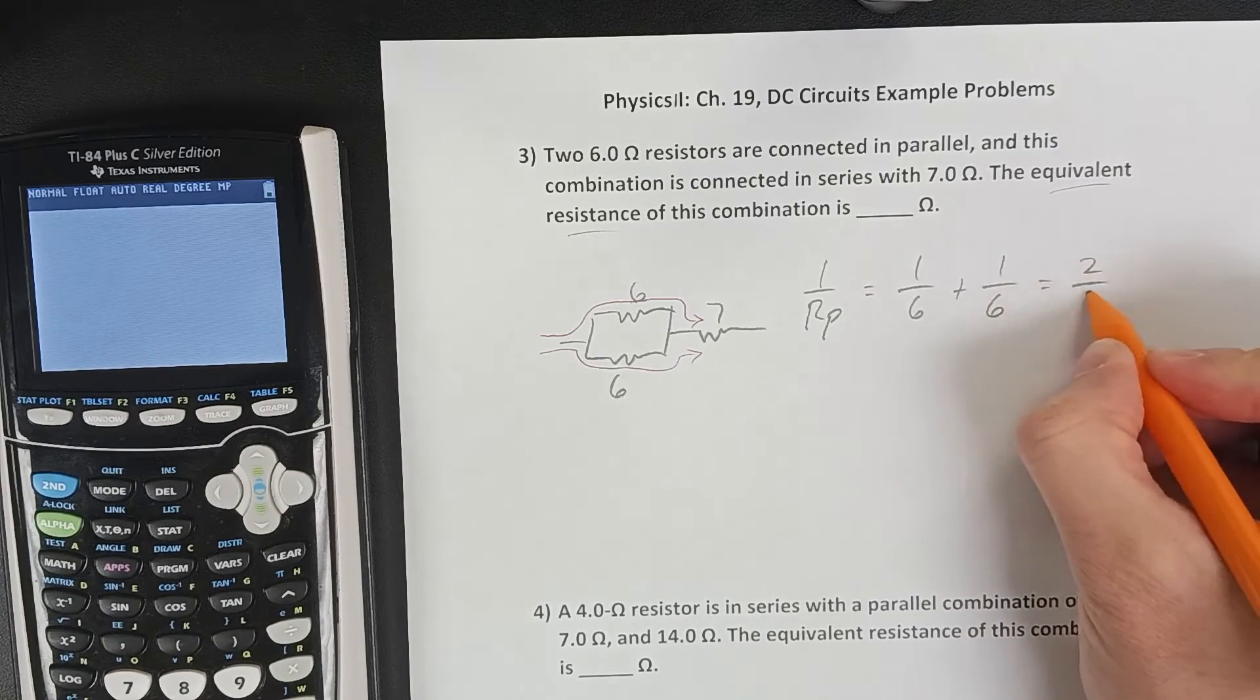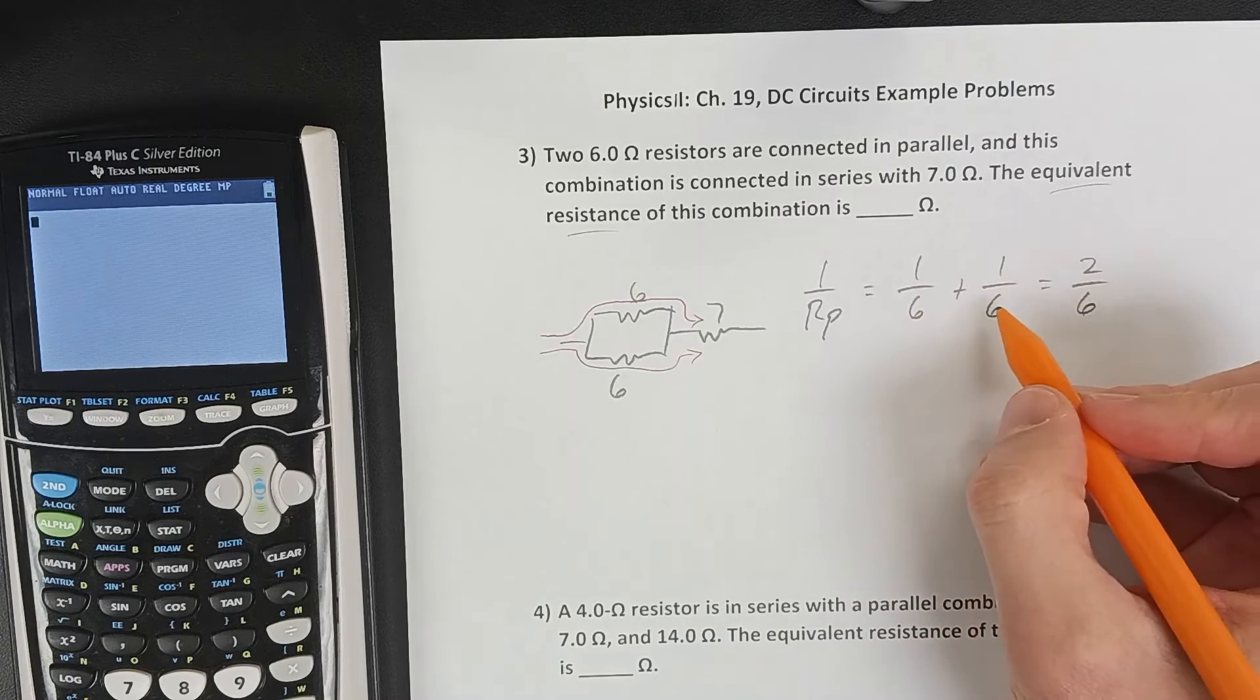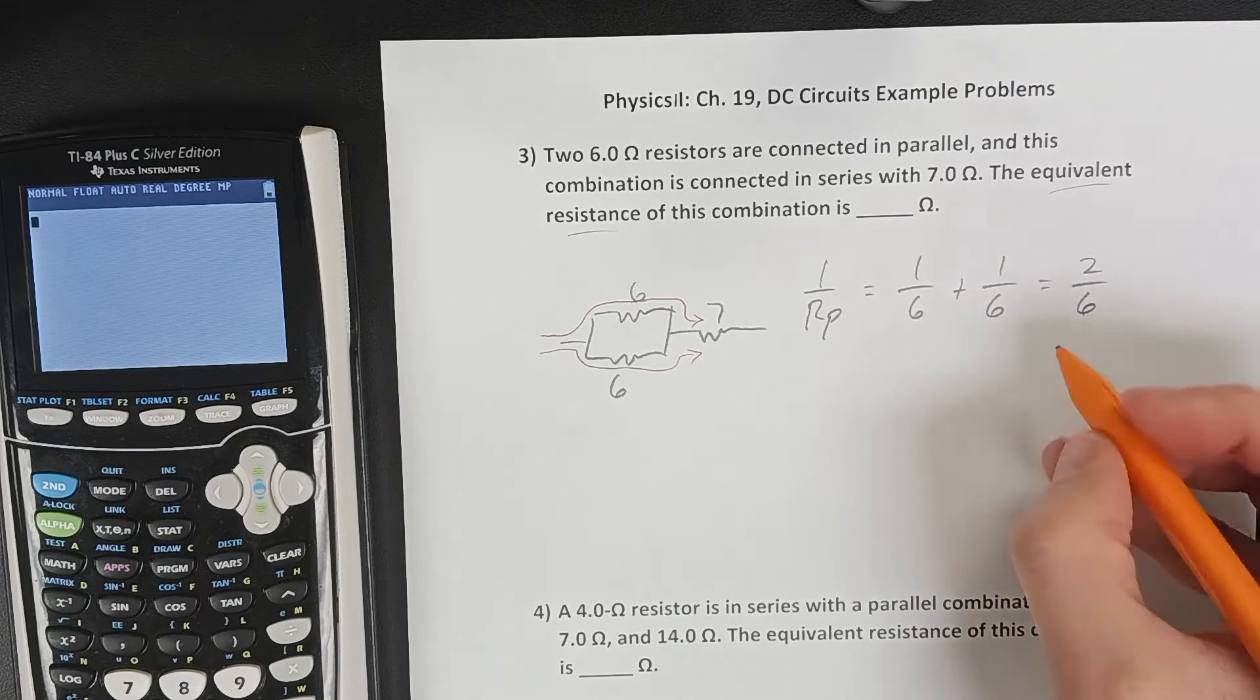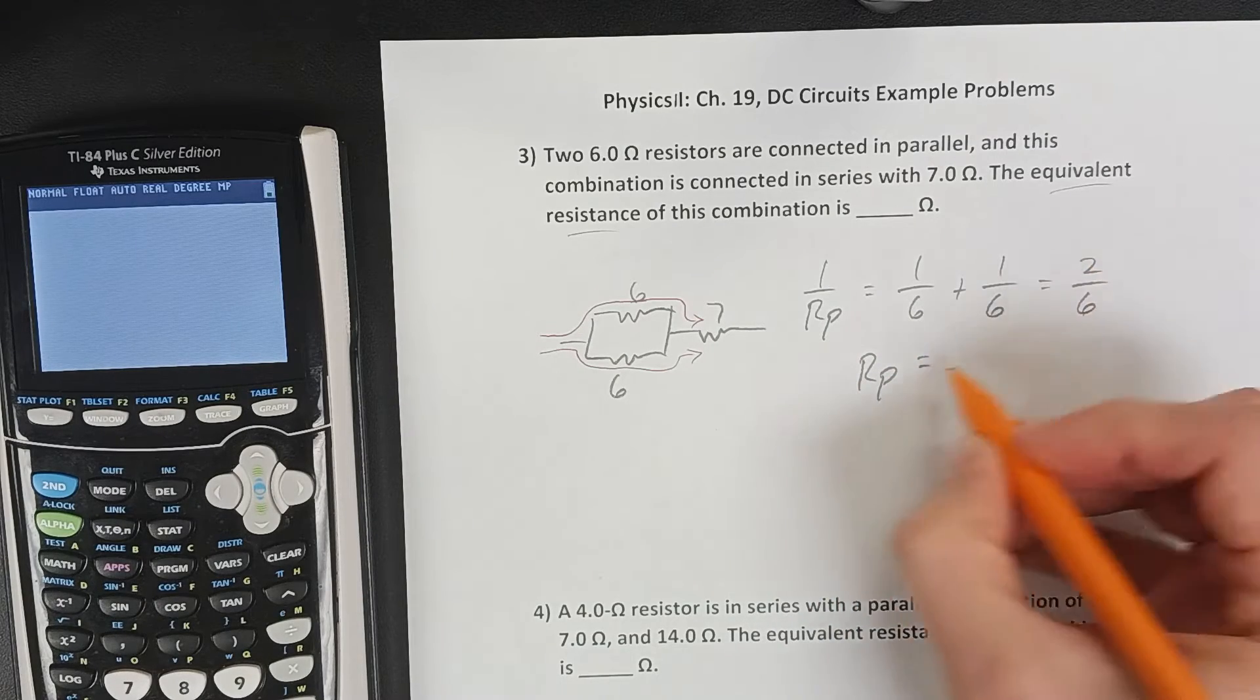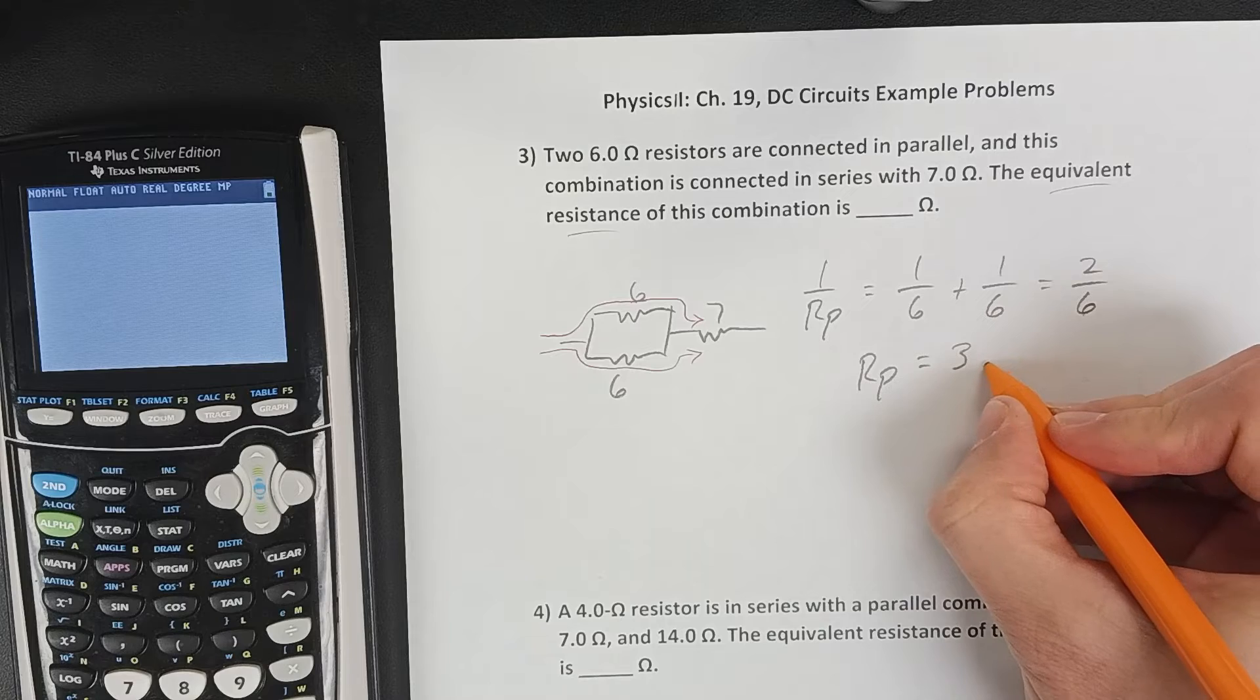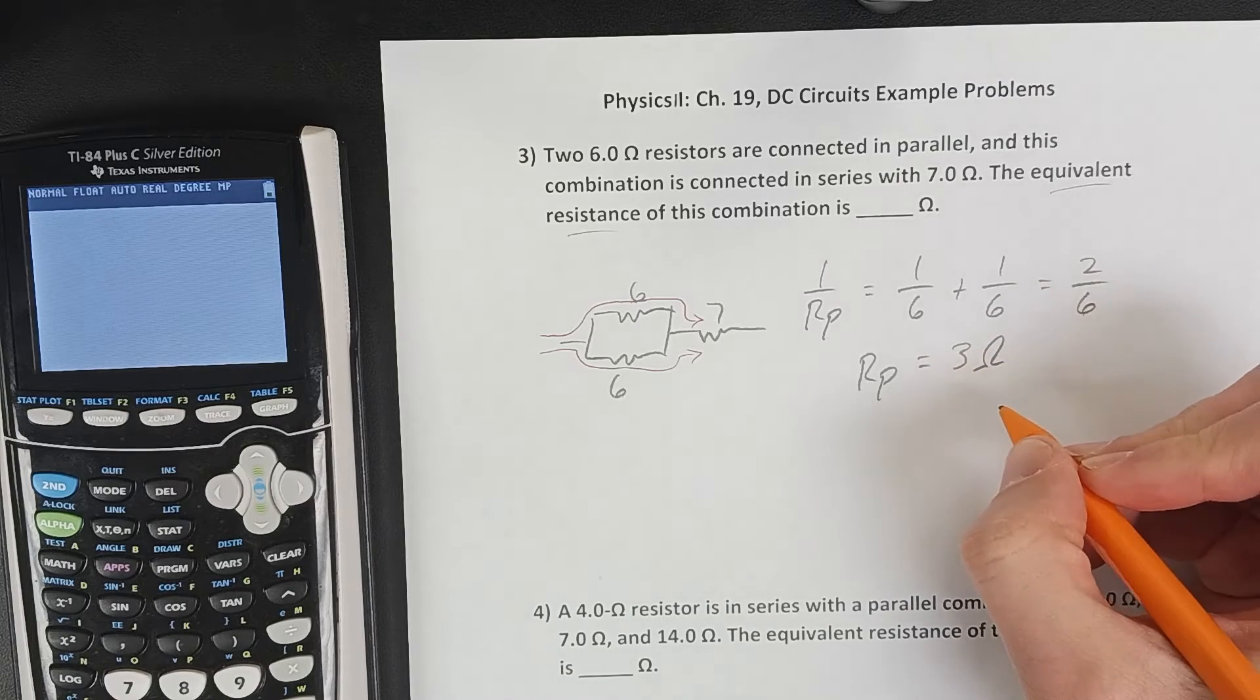You could certainly do this in your calculator, but one over six plus itself is two over six. And then we want to take the inverse of that, well that would be six over two, that would give us a total right here of three ohms.